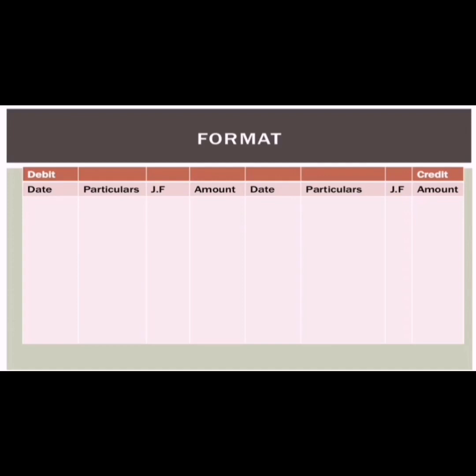Here is the format of the ledger. The left side is the debit side and the right side is the credit side. On the debit side, the first column is the date column, next is the particulars or detail column, then the J.F. column which stands for journal folio or journal reference, and finally the debit amount column. All columns are very similar on the credit side.